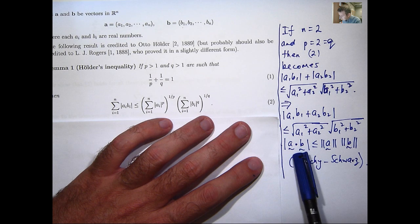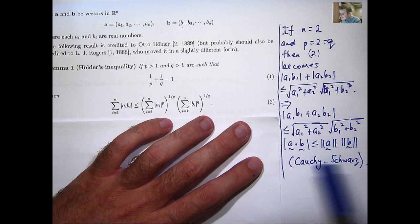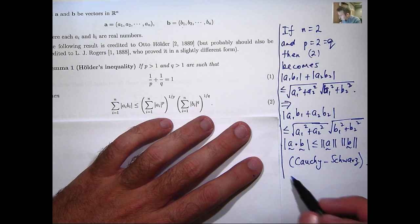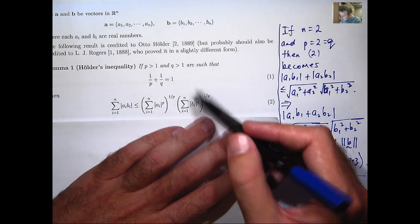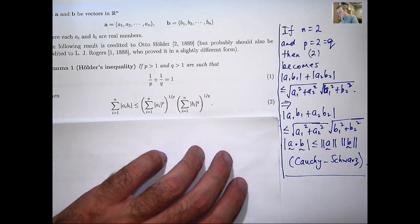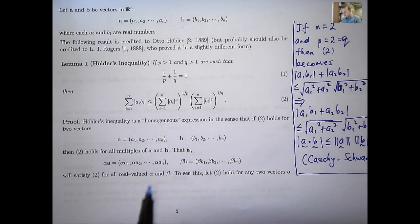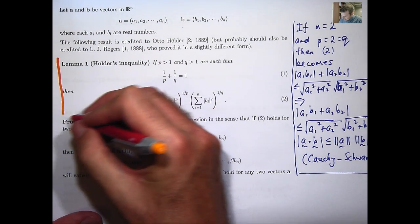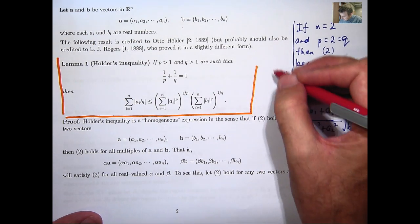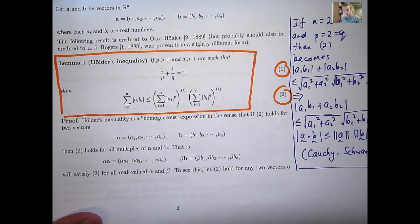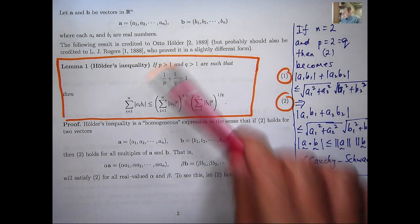So we get the Cauchy-Schwarz inequality. Essentially it says that if you take two vectors and take the absolute value of their dot product, that is less than or equal to the product of the two vectors' lengths or magnitudes. So that's a special case when N equals 2 and P and Q are both equal to 2. Lemma 1 — Hölder's inequality — is going to be the main focus of this presentation. That's the statement of the result; let's talk about the proof.